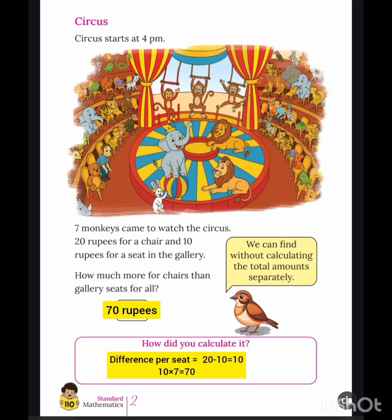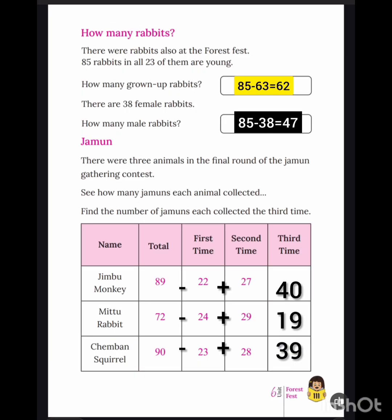The difference per seat: 20 minus 10 is equal to 10, and 10 multiplied by 7 is equal to 70. Next, rabbits were also at the Forest Fest — 85 rabbits in all. 85 minus 63 is equal to 22, and 85 minus 38 is equal to 47. Thank you.